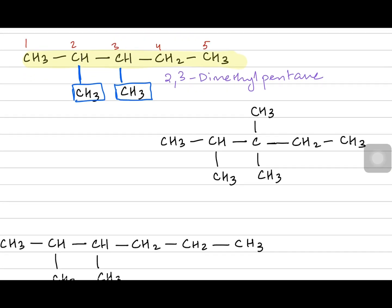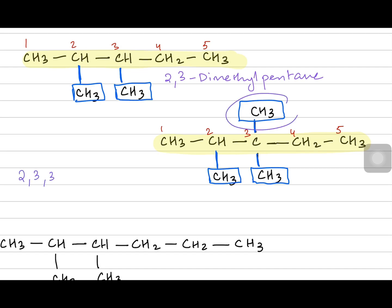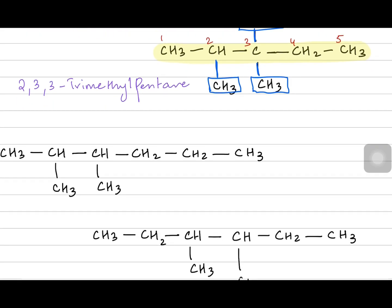The next structure is again a continuation of five carbons. There's a branch on carbon two, a branch on carbon three, but wait — there is another branch also on carbon three. So from one through five there are overall three branches. You call it 2,3,3-trimethylpentane — three of these are methyl branches, 'tri' because there are three methyls.